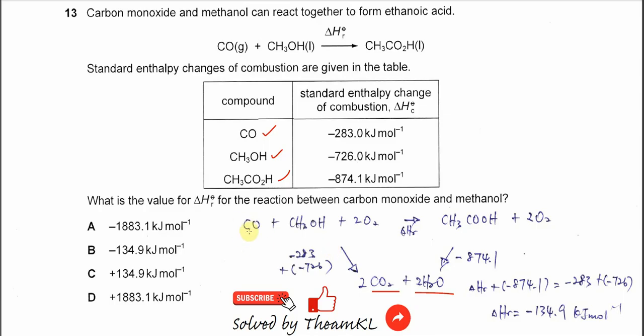Because the carbon monoxide, only one mole burned, so it's negative 283. Methanol, only one mole gets burned, so it's negative 726 kilojoules per mole. So this enthalpy is already obtained. And because this ethanoic acid also one mole gets burned, so it's negative 874.1.